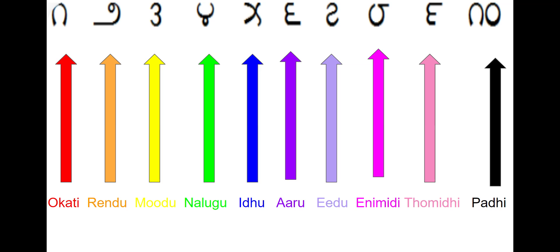Underneath you can see: Okati is one, Randu is two, Moodu is three, Nalugu is four, Aadu is five, Aadu is six, Aadu is seven, Enimidi is eight, Tommidi is nine, Padi is ten.